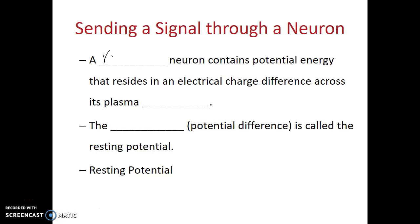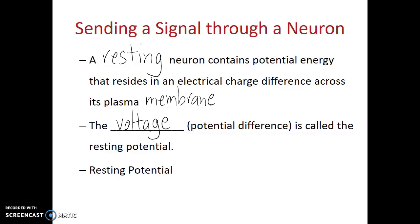A resting neuron — meaning a neuron that's not currently receiving a signal or sending a signal — contains potential energy that resides in an electrical charge difference across its plasma membrane. In its resting state, there's a negative electrical charge directly inside the plasma membrane and a positive electrical charge directly outside. This charge difference, this voltage, is called a resting potential.